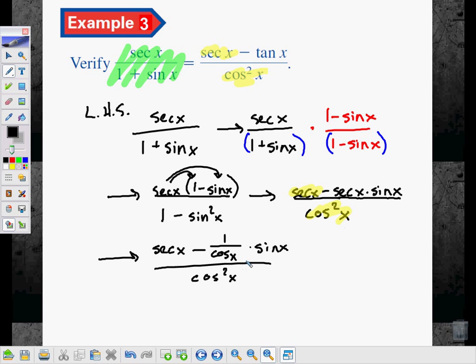Now, remember back to our identity for tangent. Tangent is equal to the sine over cosine. So when I multiply these two together, that gives me sine over cosine, which is tangent. And I'm done. The secant x stays the same. This part right here becomes tangent x. And the bottom becomes cosine squared x.